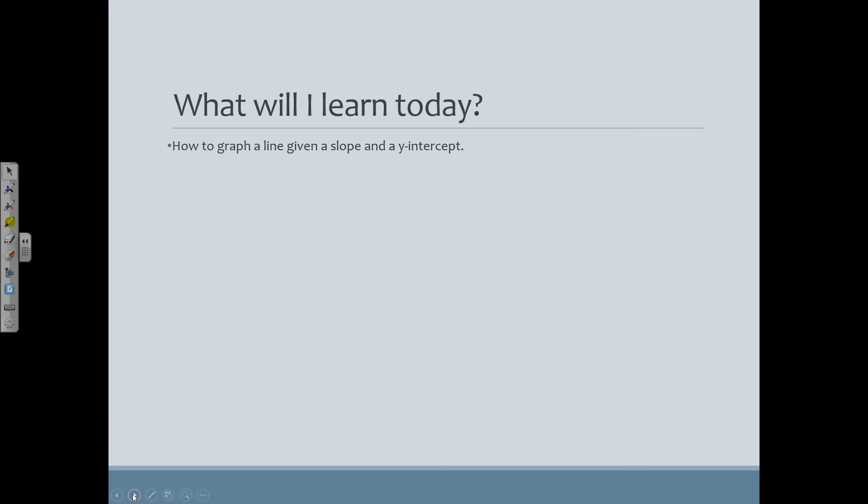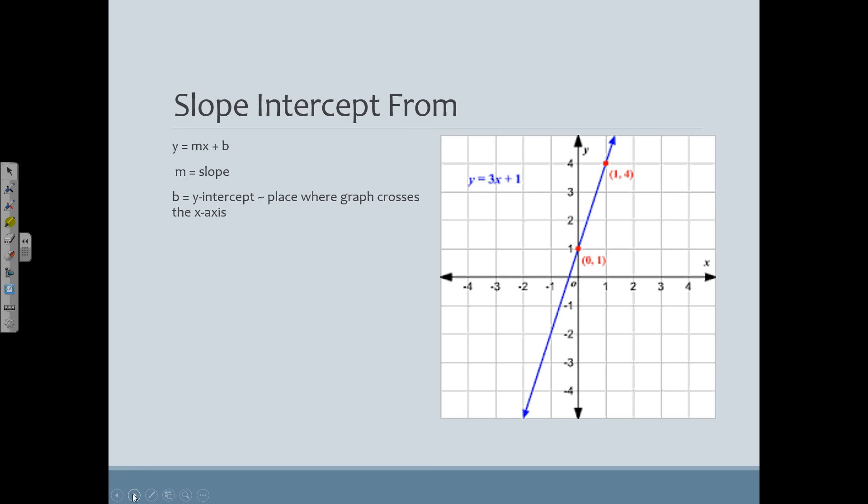What are you going to learn today? You're going to learn how to graph a line if we're given the slope and we're given the y-intercept. So how we're given that is in the form of an equation. The slope-intercept form of the equation is y equals mx plus b, where m is my slope and b is my y-intercept or the place where the graph crosses the x-axis.